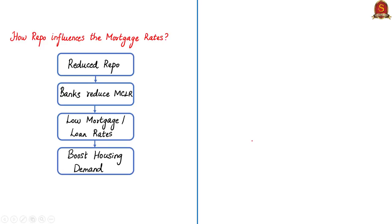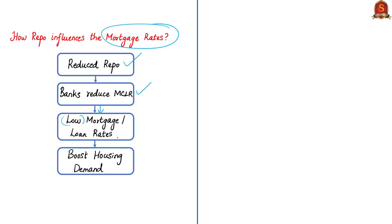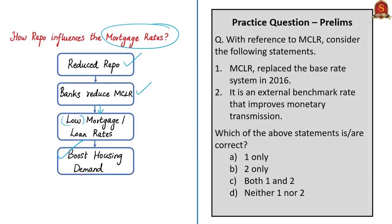Coming back to the article, with the central bank lowering the repo rate, it is likely that banks will also follow suit and reduce their Marginal Cost of Funds-Based Lending Rates (MCLR). As house loan rates or mortgage rates are indexed to MCLR, the transmission of this rate cut should reduce the borrowing cost of retail borrowers, MSMEs, and corporates, thereby boosting private consumption and housing demand.